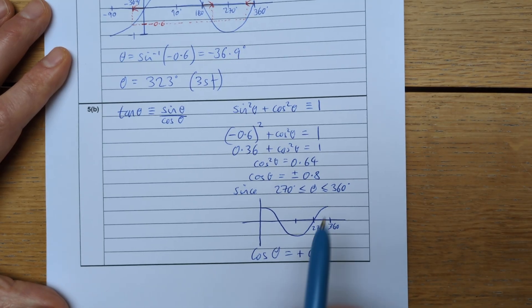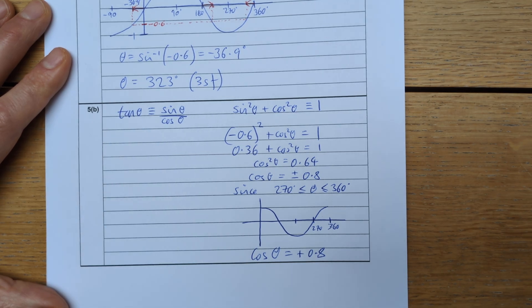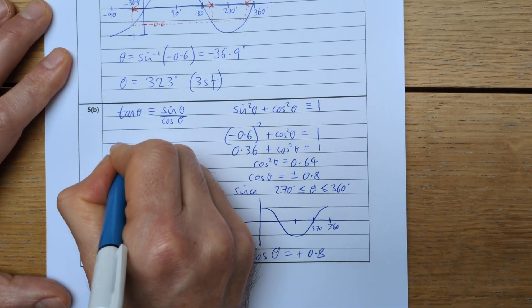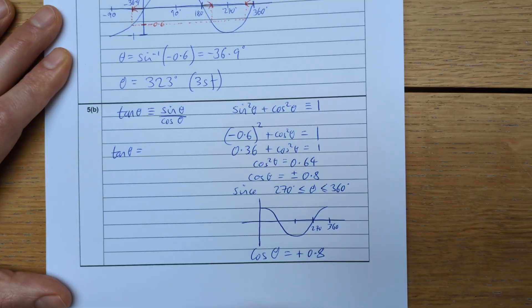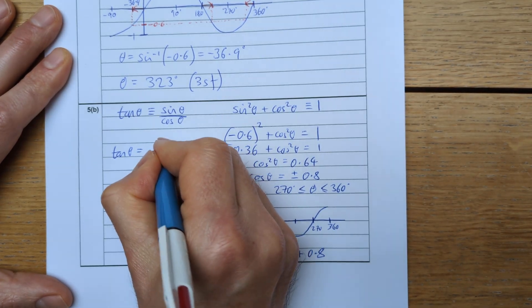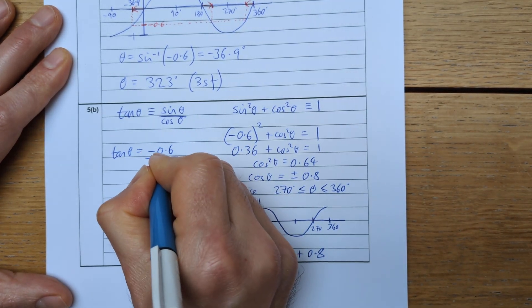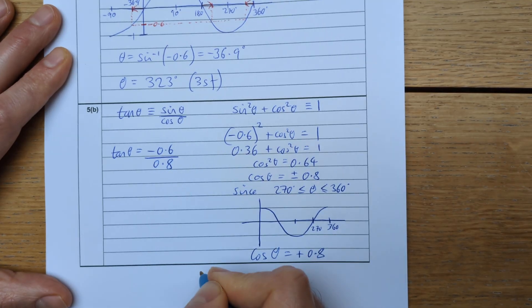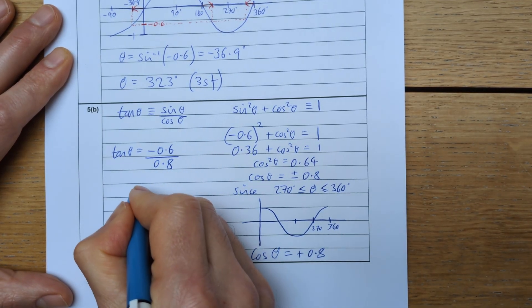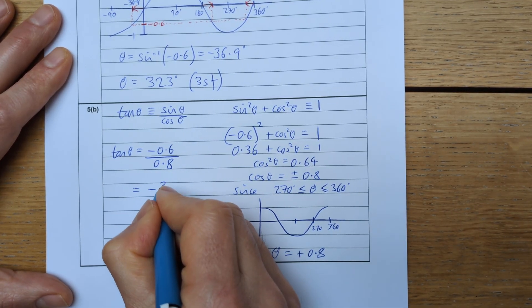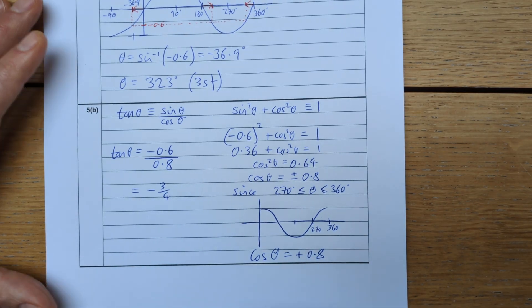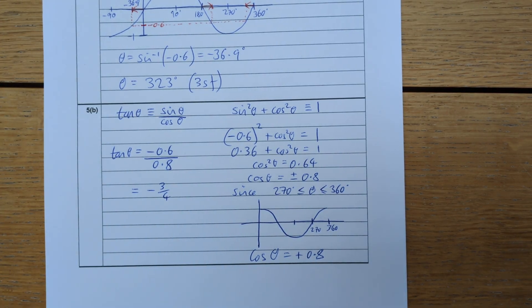Okay, so we now have cosine theta. Therefore, we have sine theta and cosine theta, and we can therefore find tan theta. So tan theta must be equal to negative 0.6 over positive 0.8, which is negative 6 eighths or negative 3 quarters, negative 0.75. And that is the exact value of tan theta.